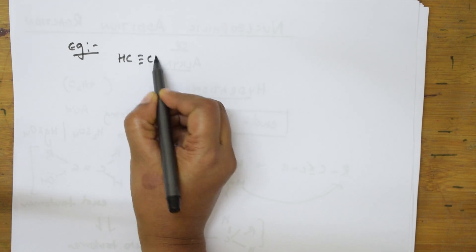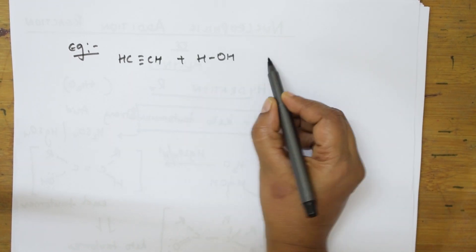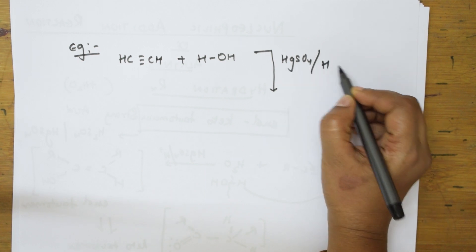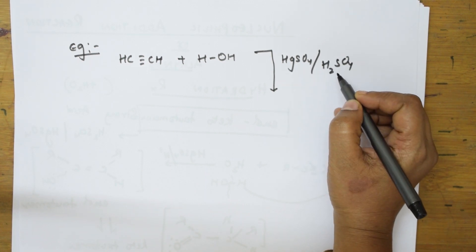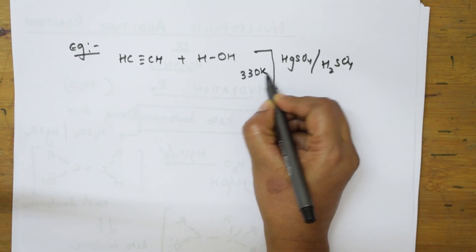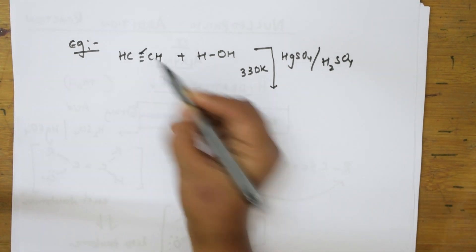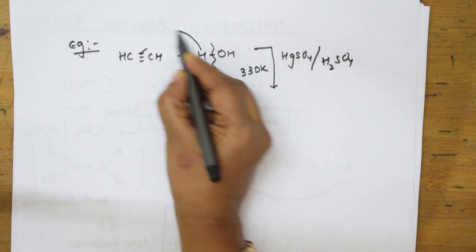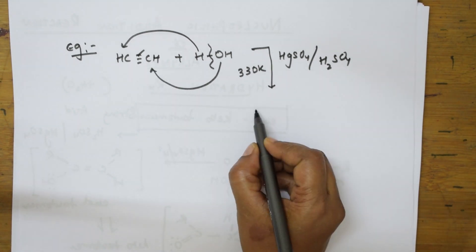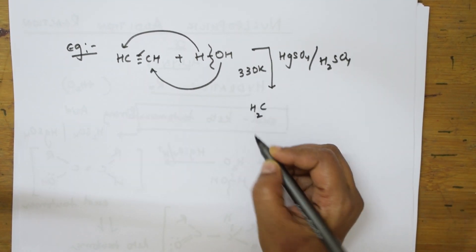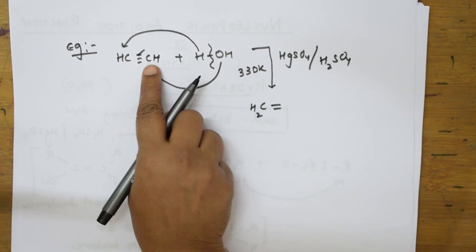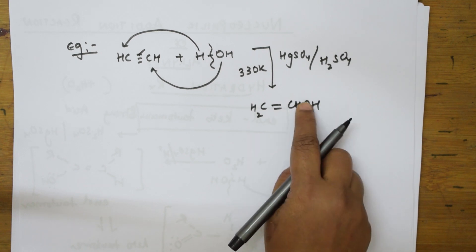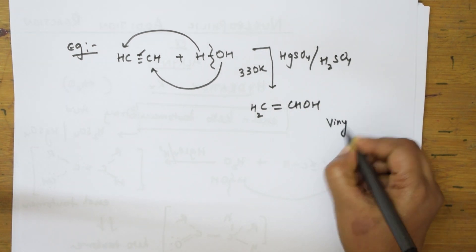Now I am going to take acetylene specifically. We add water (HOH) in the presence of sulphuric acid / mercuric sulphate at 330 Kelvin. The triple bond cleaves: hydrogen adds to one CH giving CH2, and OH adds to the other CH. The product is CH2=CH–OH, which is called vinyl alcohol — the enol tautomer.